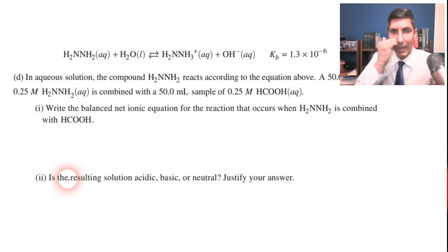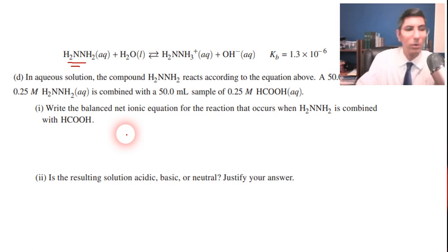Going on to part D, we have aqueous solution here. And this compound H2NNH2 reacts with water according to that equation. A 50 milliliter sample of 0.25 molar of this base is combined with 50 milliliter sample of 0.25 molar methanoic acid. Now you might be wondering, how do I know that this thing right here is a base? Well, two reasons. First of all, it produces hydroxide. That's a good sign. Also, it has a Kb. If it has a Kb, it's probably a base.